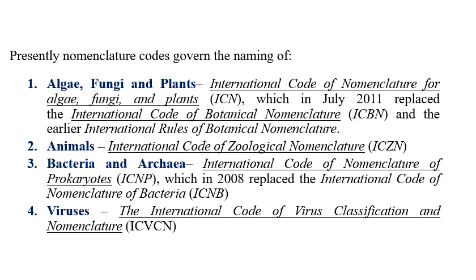For algae, plants, and fungi, naming was initially governed by ICN — the International Code of Nomenclature of Algae, Fungi, and Plants — which was replaced by ICBN, the International Code of Botanical Nomenclature, in the year 2001. ICBN provides rules and regulations for naming fungi, plants, and algae. For animals, ICZN — the International Code of Zoological Nomenclature — is the responsible body.